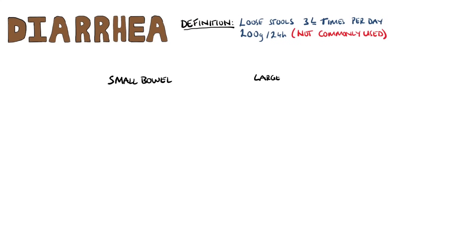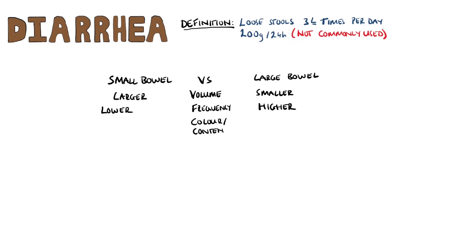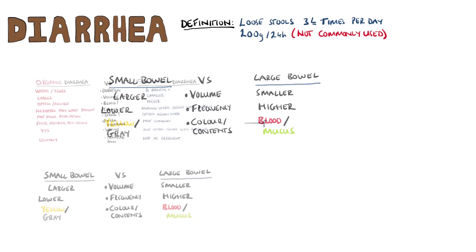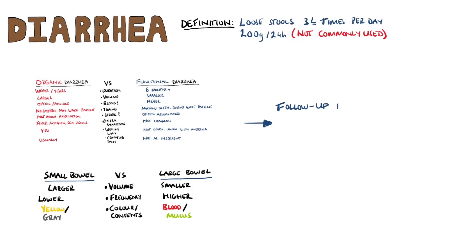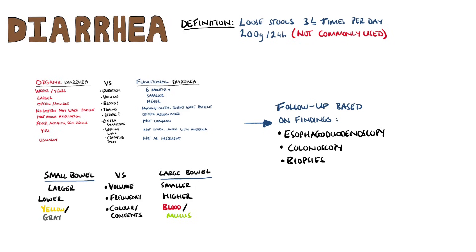After making the distinction between organic and functional, you want to evaluate whether it's a small or large bowel problem. Small bowel-related diarrhea usually has a higher volume and a lower frequency, and is often yellow or even grey in colour. Large bowel-related diarrhea instead is very frequent with a low volume, and much more frequently features blood and mucus. After addressing these two questions, you would then look at doing a follow-up based on your findings, including potential esophageal duodenoscopy or colonoscopy and biopsies.